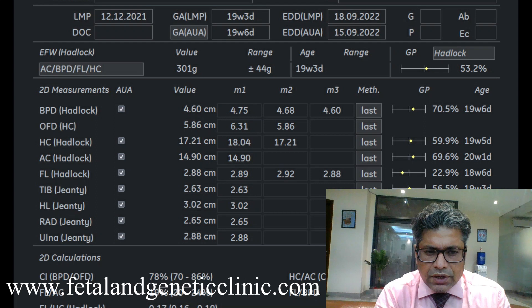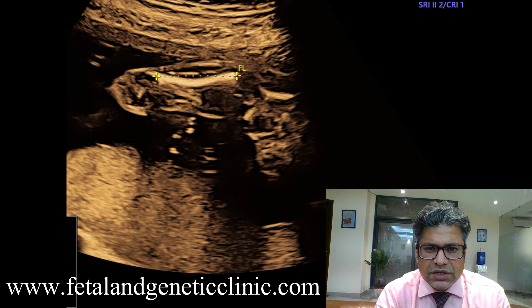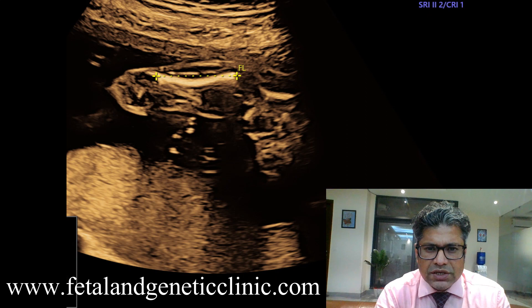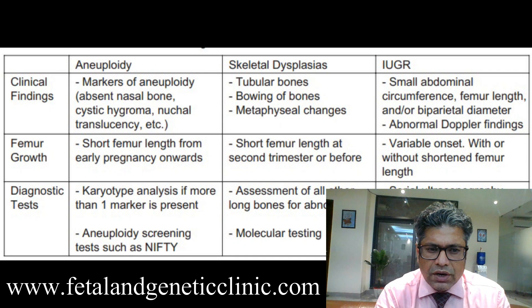This is what we are trying to look for — clinodactyly. In the biometry, only the femur is turning out to be short compared to the other long bones. So we are making a diagnosis of short femur length. The differential diagnosis lies between aneuploidy, skeletal dysplasia, and IUGR.